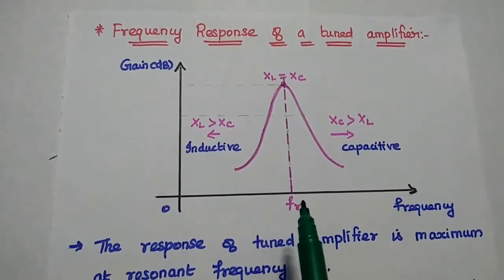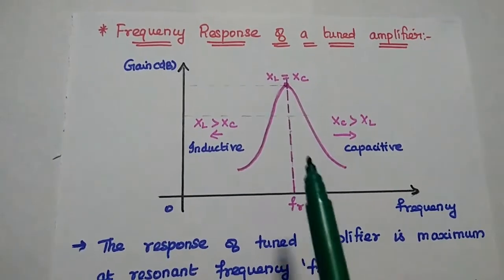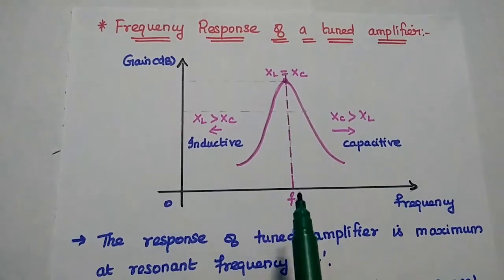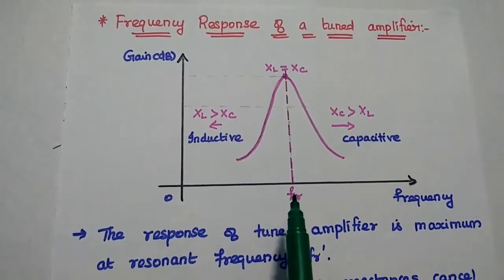Do you all understand this point? At resonant frequency, there is no imaginary term. The impedance is purely resistive. So it can produce maximum output.